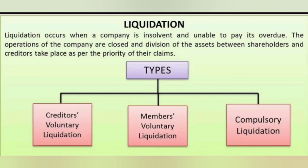What is liquidation? Liquidation occurs when a company is insolvent and unable to pay its overdue obligations. The operations of the company are closed and division of assets between shareholders and creditors takes place as per the priority of their claims. There are three types: creditors' voluntary liquidation (where creditors, not receiving payment, voluntarily call for liquidation), members' voluntary liquidation (where members initiate the process), and compulsory liquidation (when the company becomes bankrupt and everything is automatically closed).